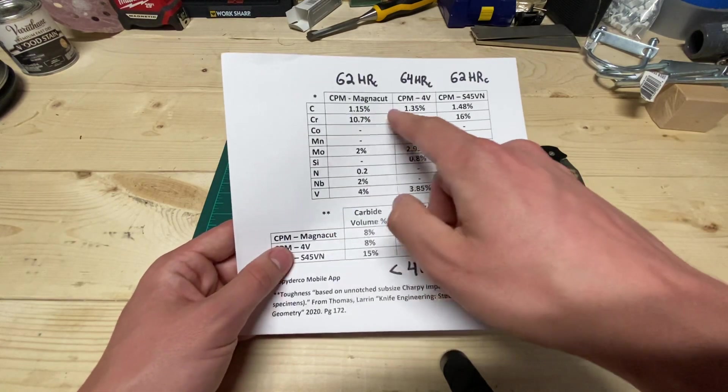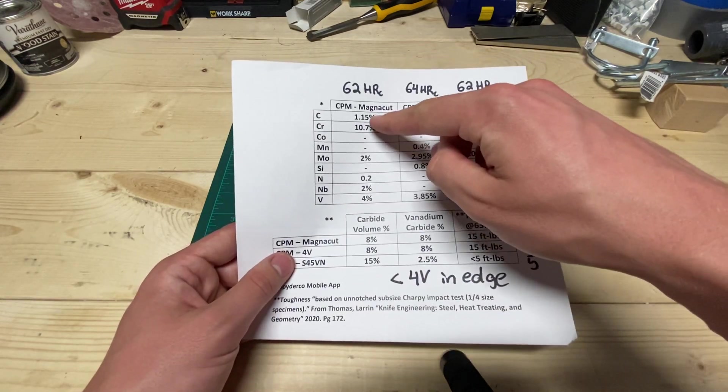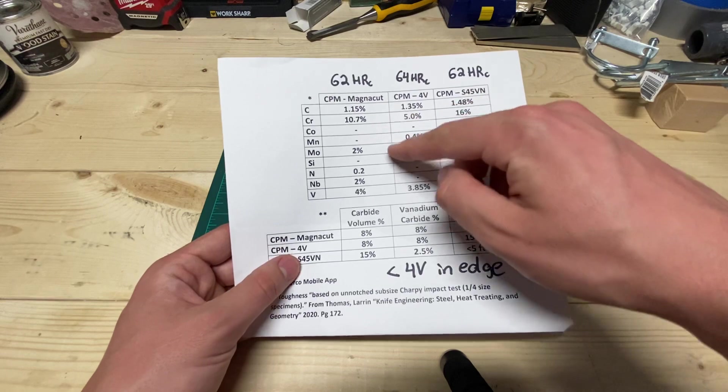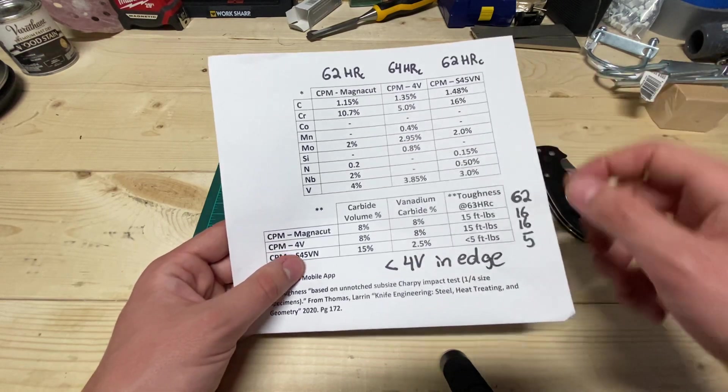Well let's just run through the composition really quick. So you've got a little bit of carbon, chromium, molybdenum, nitrogen, niobium, and vanadium.